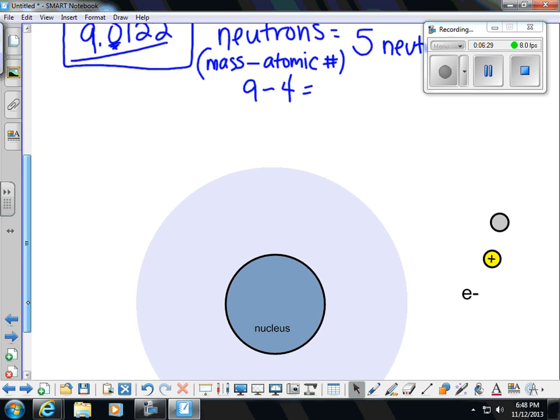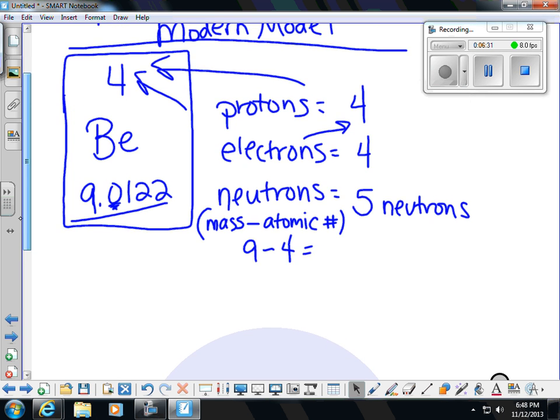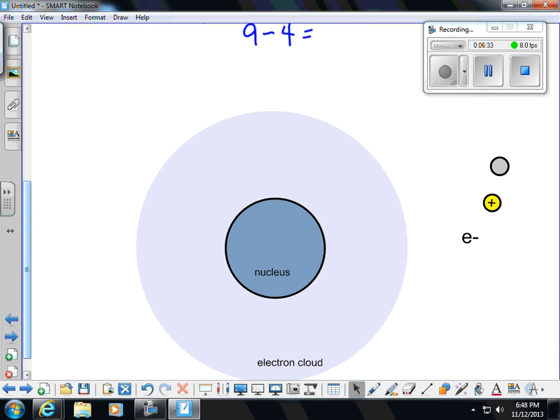When we go to make our modern day model, we have 4 protons, 5 neutrons in the nucleus. So we're going to put 4 protons here, and 5 neutrons.